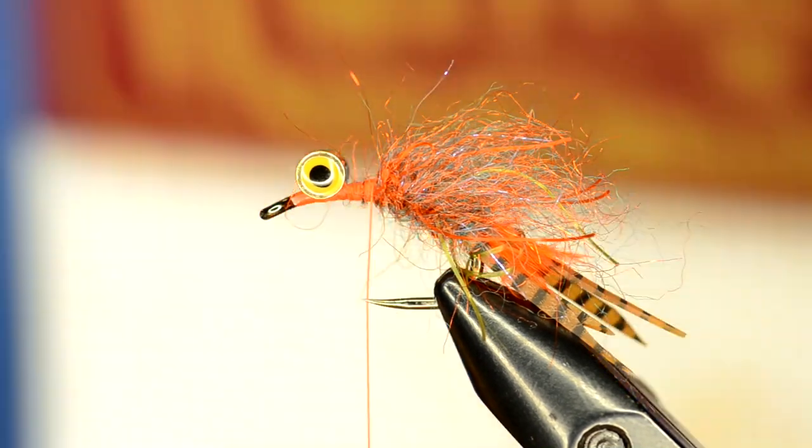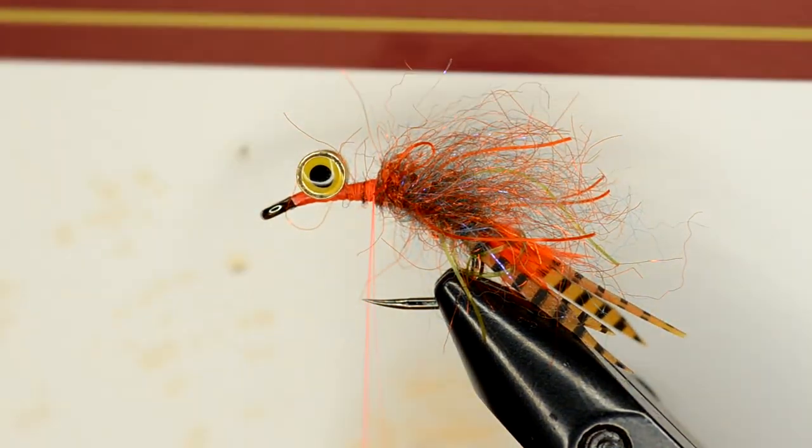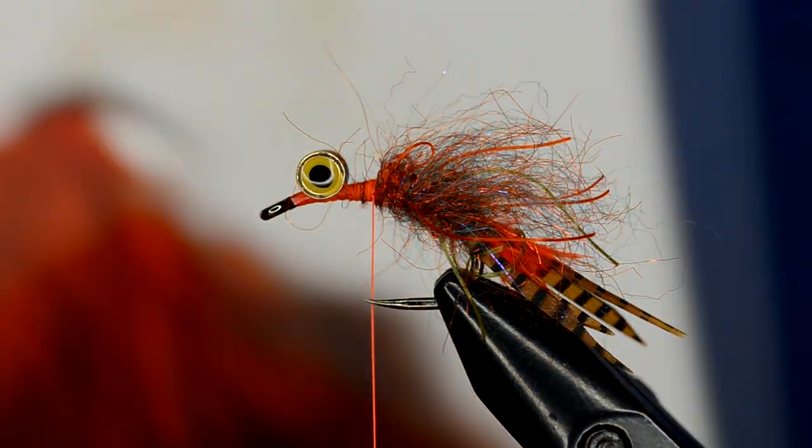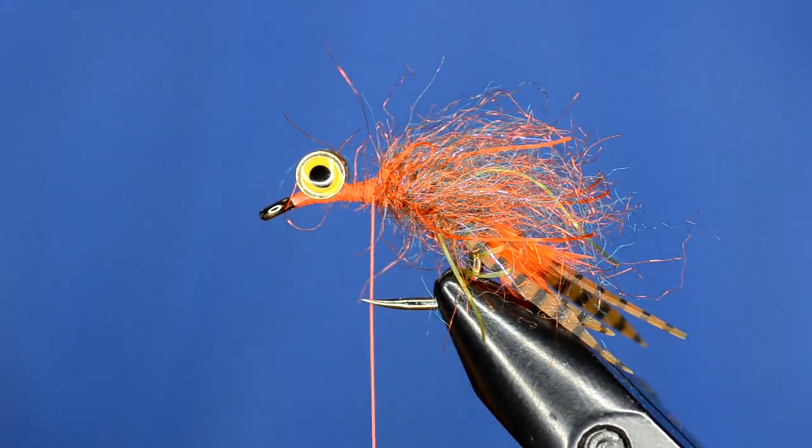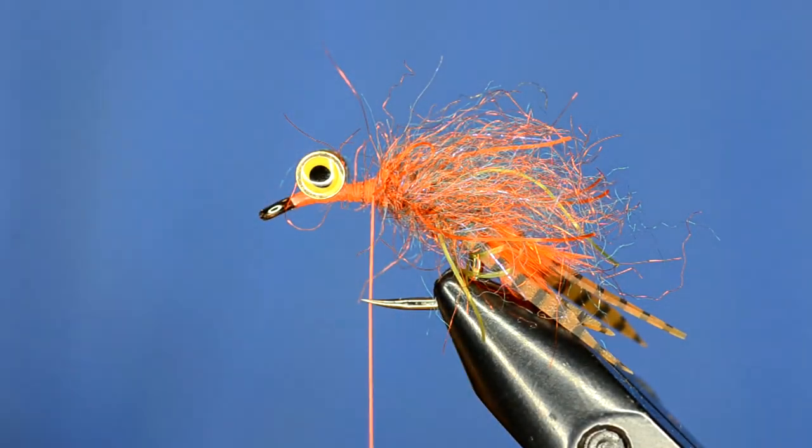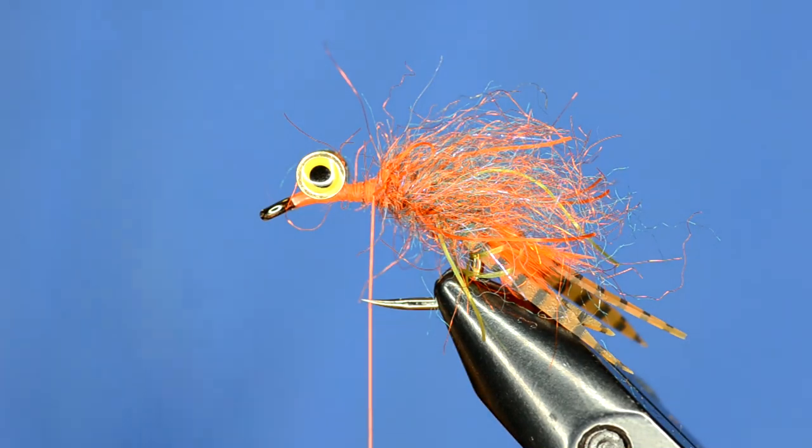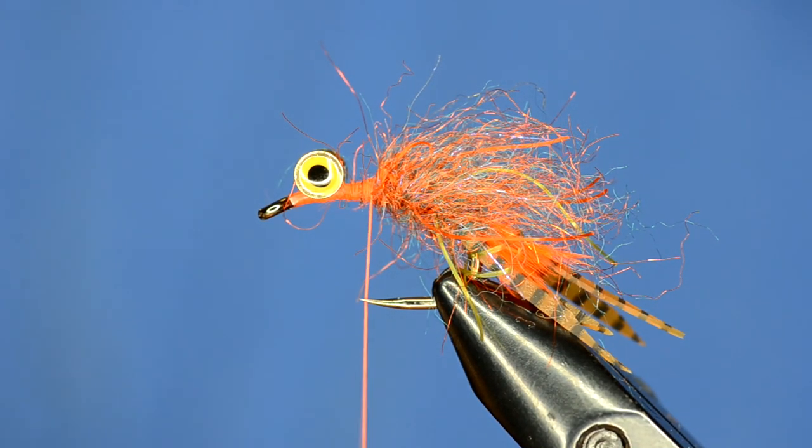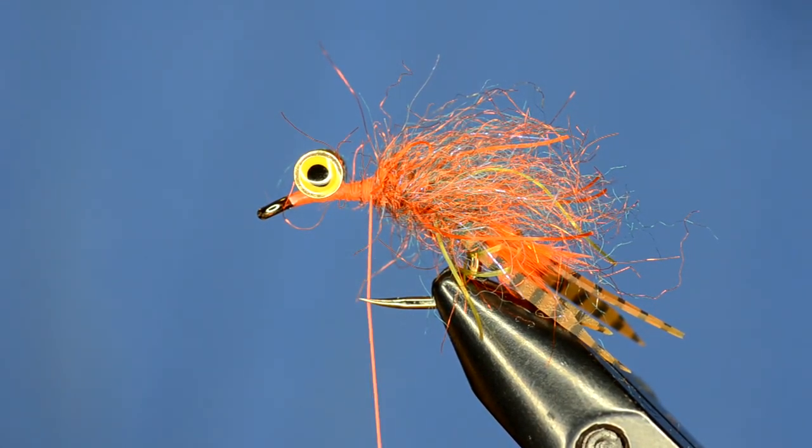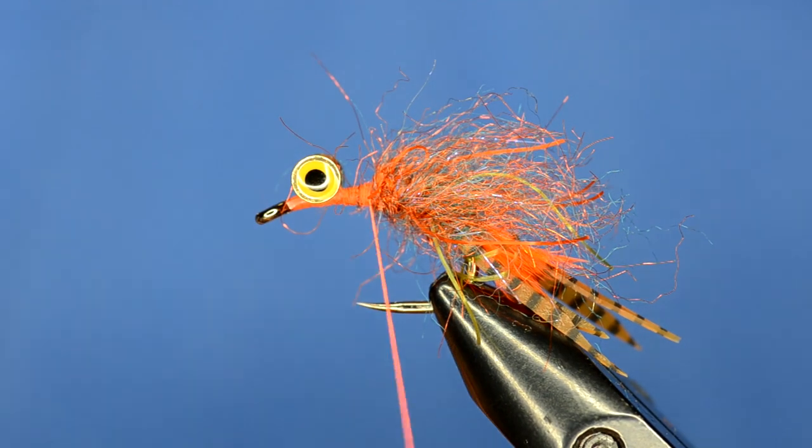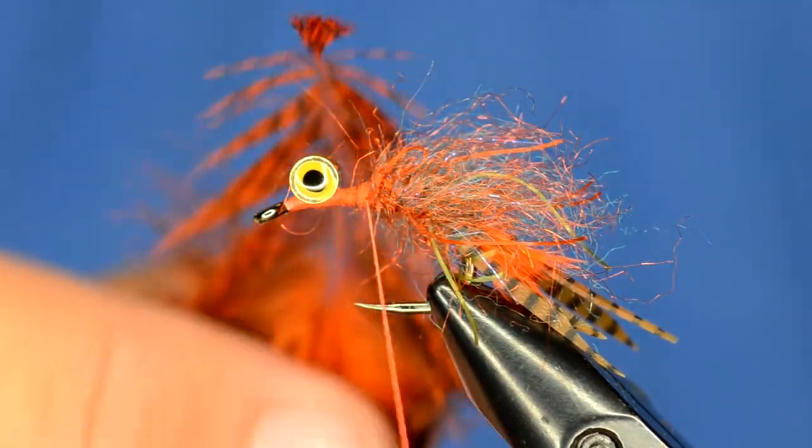Okay so now we're starting to look good. Now we're going to put on a little bit of a hackle collar. We're going to use some Whiting Cock de Leon hen saddle and this one is speckled orange.